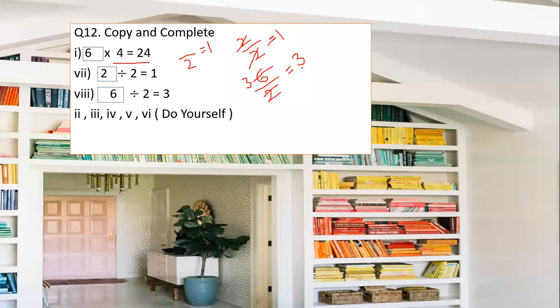Question number 12 has parts two, three, four, five, and six — these are very simple and you have to do them by yourself. Part two says: blank multiplied by 2 equals 24. That means two how many times is 24? Two 12 times is 24, so the answer is 12.